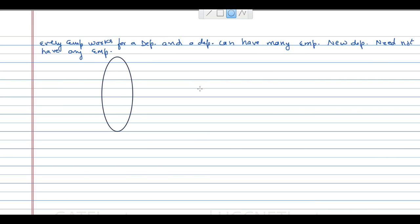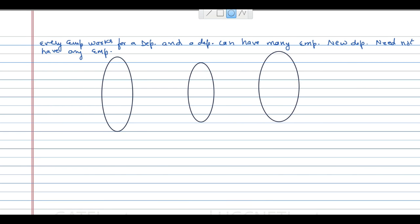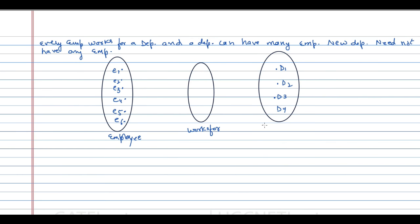This diagram is representing the employees, this is representing their association, and this is representing the department. We have employees e1, e2, e3, e4, e5, and e6, and departments d1, d2, d3, and d4. Here, employee is an entity, 'works for' is the relationship, and department is also an entity.